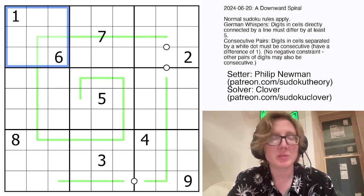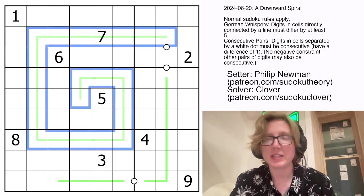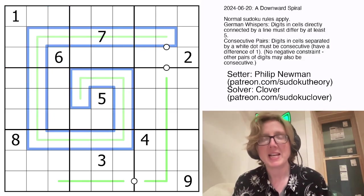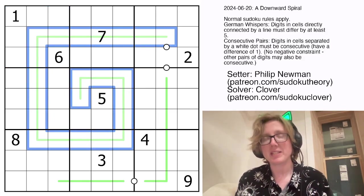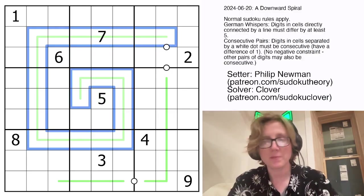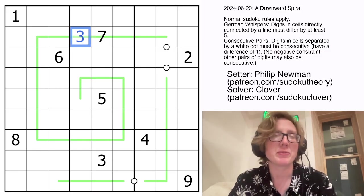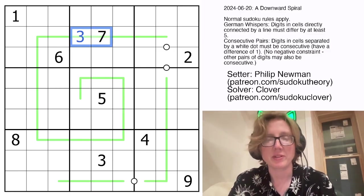And then we also have German Whispers, which are these green lines in the grid, and along each green line, according to German Whispers rules, digits that are next to each other on the same line have to have a difference of 5 or more. So, for instance, we could put a 2 here because that is a difference of 5, but we can't put a 3 here because the difference between 3 and 7 is only 4.